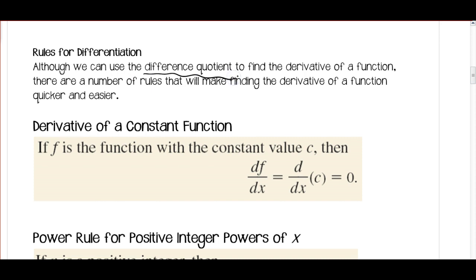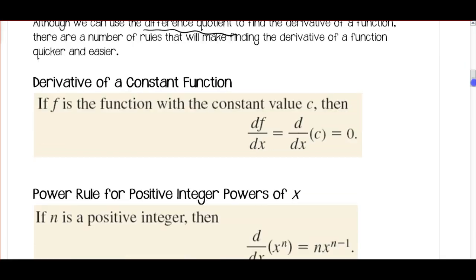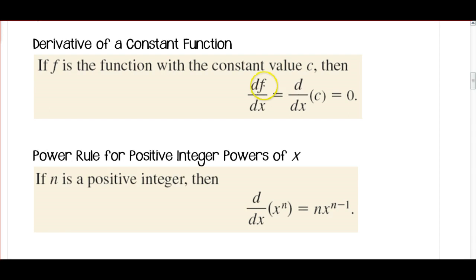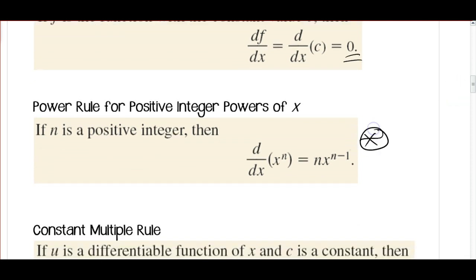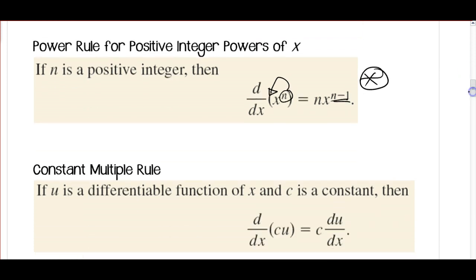Let's take a look at rules for differentiation. We can use the difference quotient, but there are rules that make it quicker and easier. First, the derivative of a constant function: d/dx of a constant c equals 0. Anytime we take the derivative of a constant, it's 0. Next, one of the most important rules — the power rule: d/dx of x to the n equals n times x to the n minus 1. We take the exponent, move it to the front, and reduce the exponent by 1. We'll use this constantly when working with polynomials.